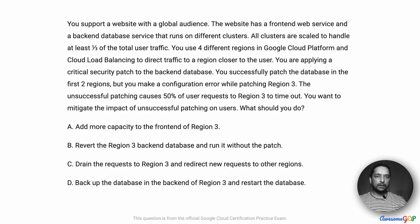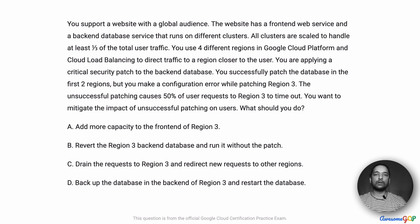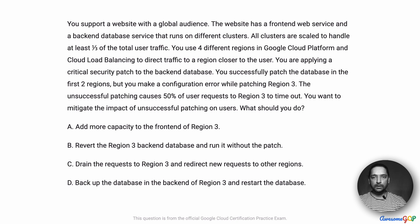In this project scenario, you support a website with a global audience. The website has a front-end web service and a back-end database service that runs on different clusters. All clusters are scaled to handle at least one-third of the total user traffic. You use four different regions in Google Cloud Platform and cloud load balancing to direct traffic to a region closer to the user.